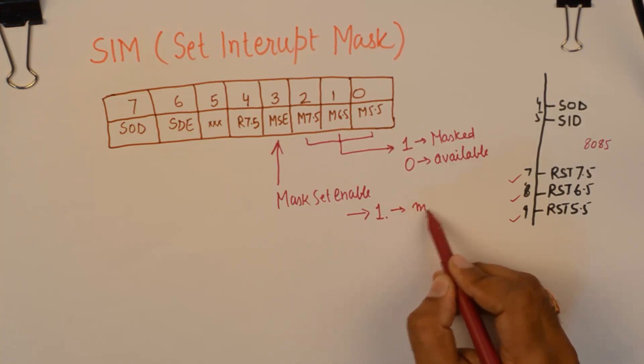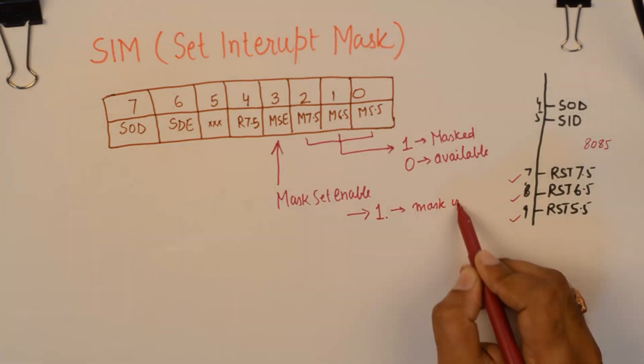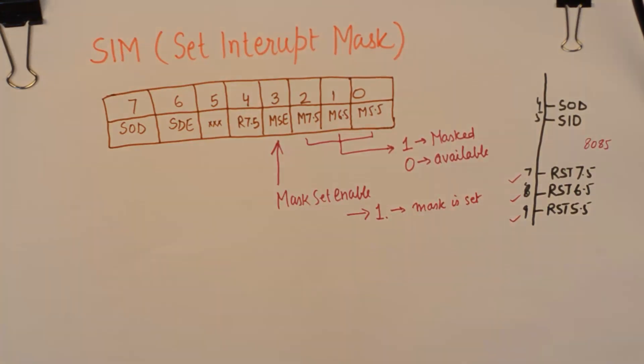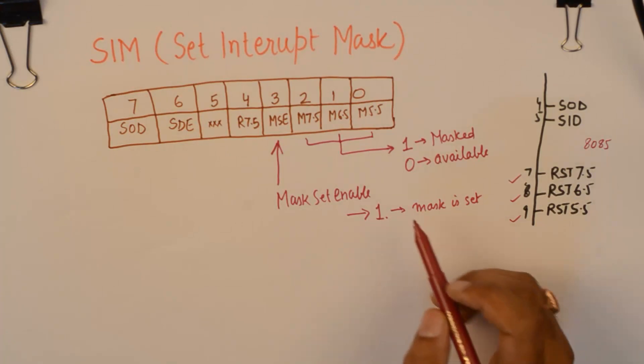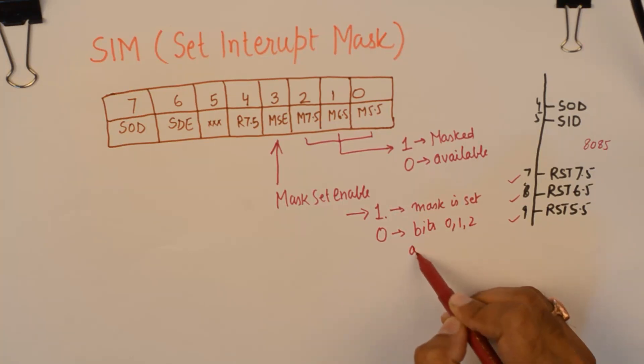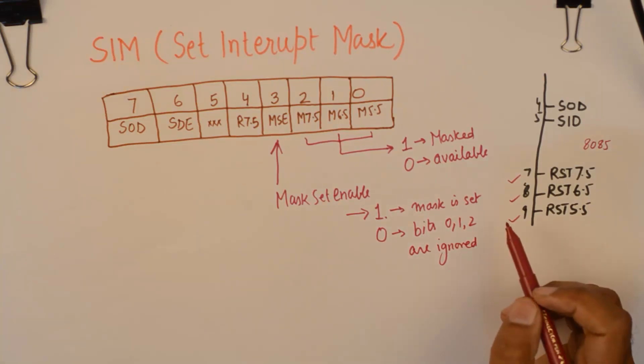This means mask is set or you can set any of these interrupts to be masked and if it is 0, bits 0, 1 and 2 are ignored. So this is what happens.